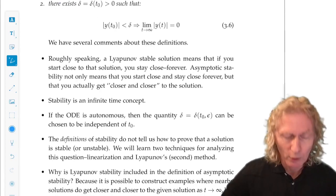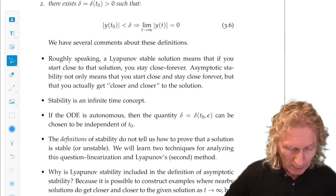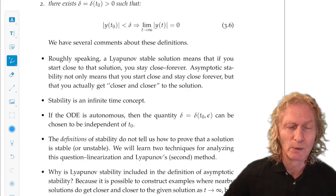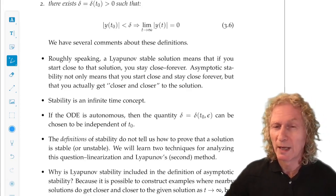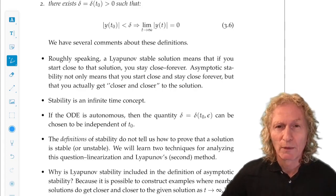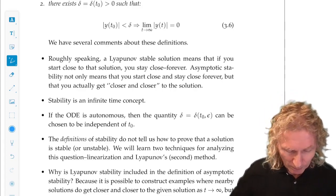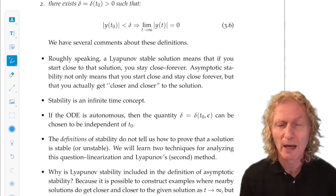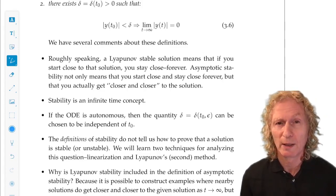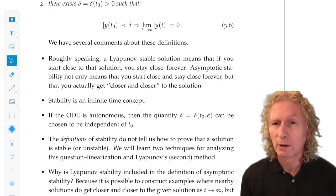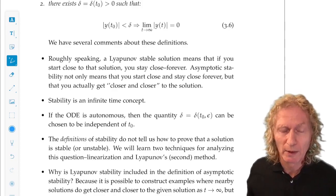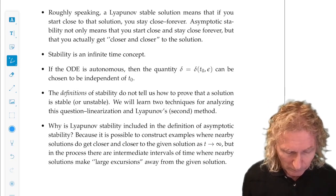So, a few bullet points for you to ponder. Stability is an infinite time concept. Of course, mathematicians like to generalize everything and modify these conditions to see what would happen. I'll leave you to ponder that. The definitions of stability do not tell us how to prove that they are satisfied in particular examples. We're going to learn about that later when we learn about linearization and Lyapunov's second method.